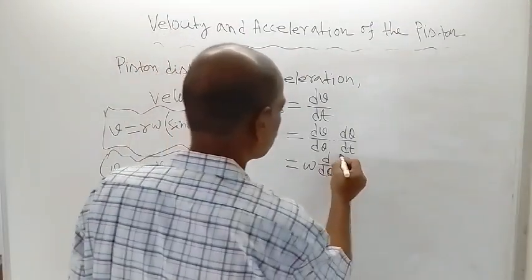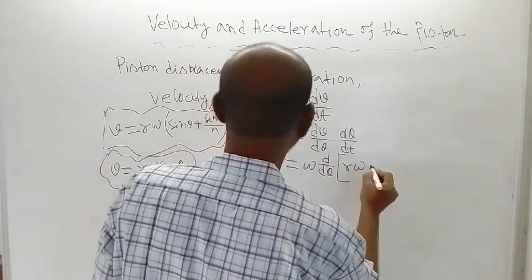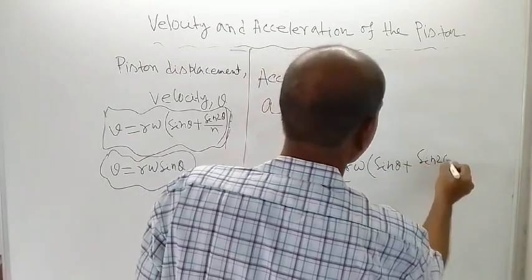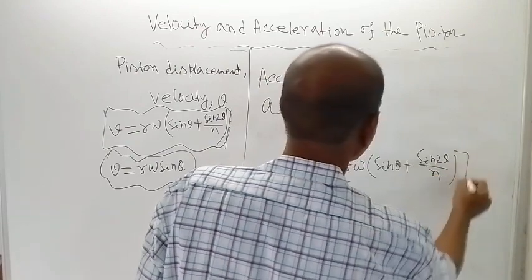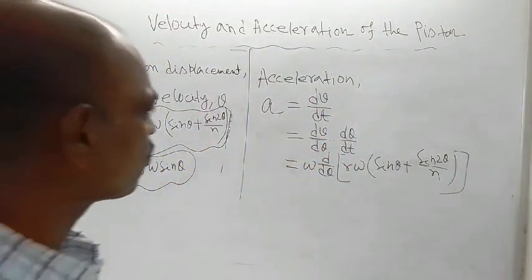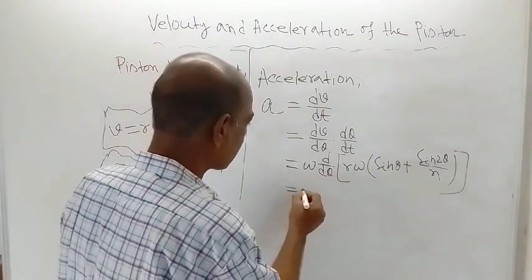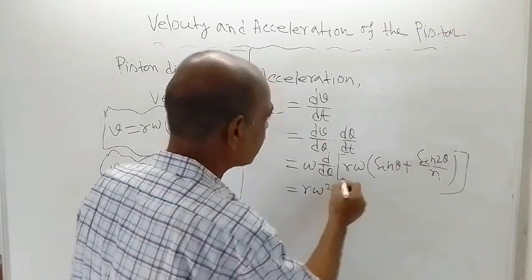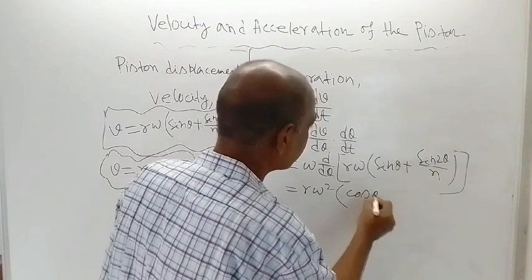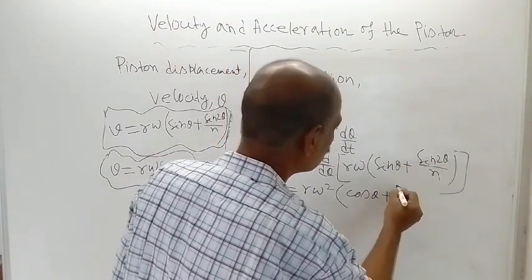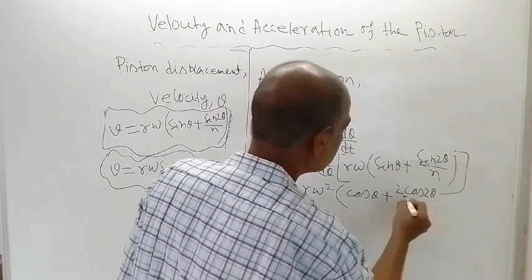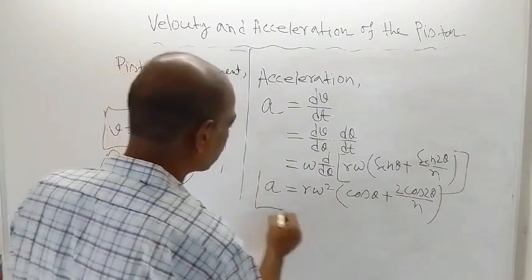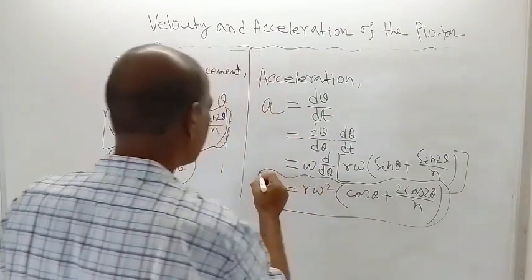Taking d/dθ of V = R·ω·(sinθ + sin2θ/n): R·ω is constant and can be taken outside, giving R·ω². Within the bracket, the derivative of sinθ is cosθ, and the derivative of sin2θ is 2cos2θ divided by n. So the expression for acceleration of the piston is: a = R·ω²·(cosθ + 2cos2θ/n).